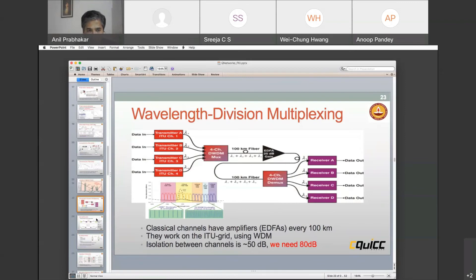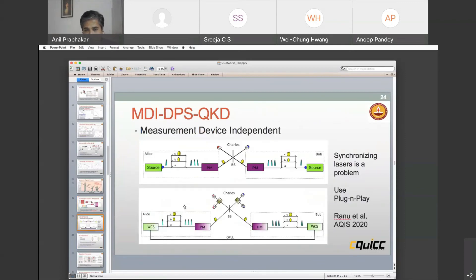There are other protocols that try to circumvent this problem. This one is one called measurement device independent, where you can see that the detector is at the center of a place called Charles. Then you have two such setups coming from Bob and Alice. Because each side can be 100 kilometers, you will get 200 kilometers. People continue to work to expand these distances.